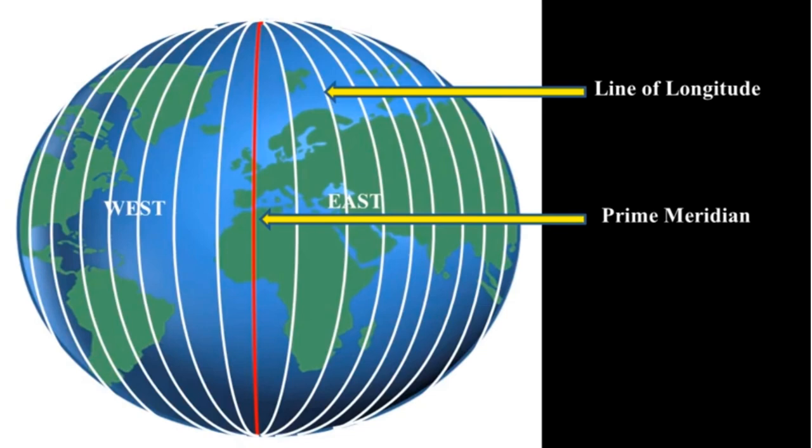These vertical lines are called as the line of longitude or meridians of longitude. These lines are not parallel to each other. They converge at the north pole and south pole. To converge means to meet at one point.